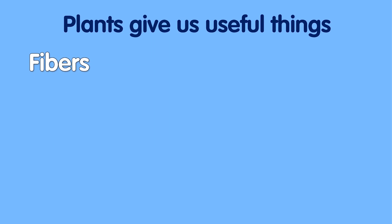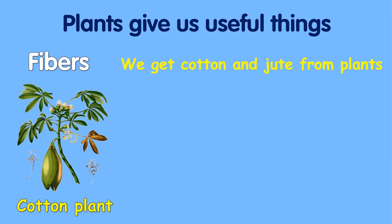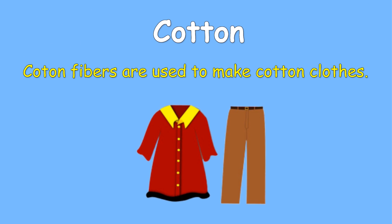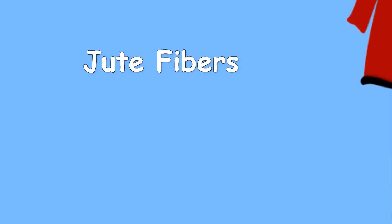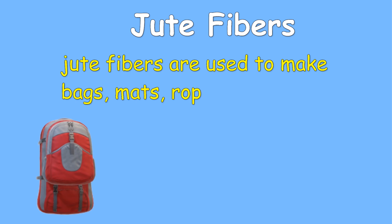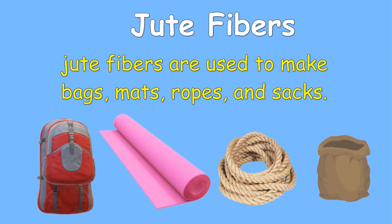Fibers: we get cotton and jute from plants. Cotton fibers are used to make cotton clothes. Jute fibers are used to make bags, mats, ropes and sacks.